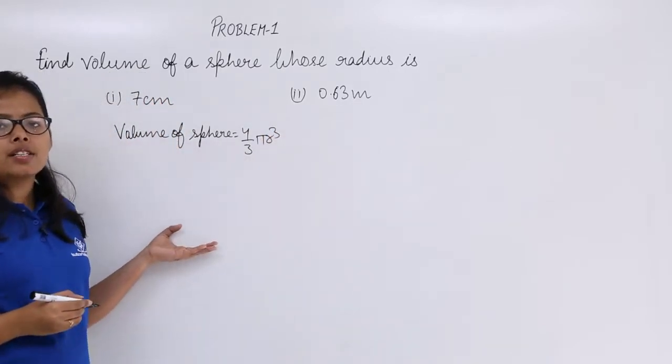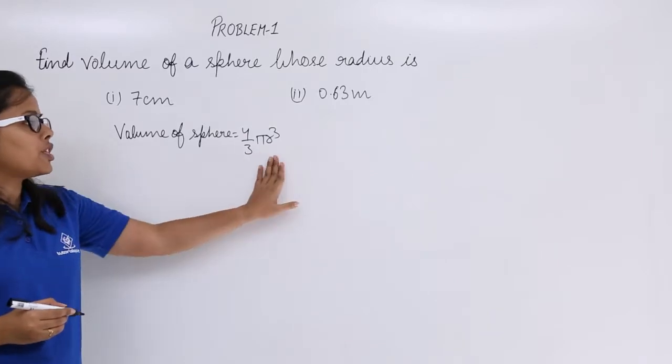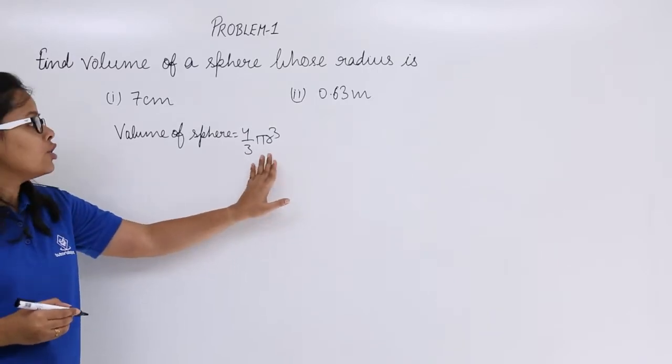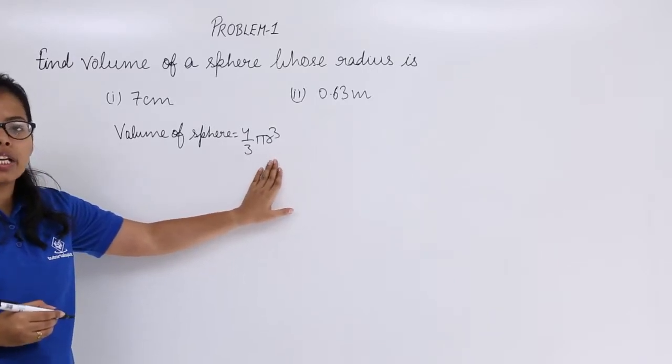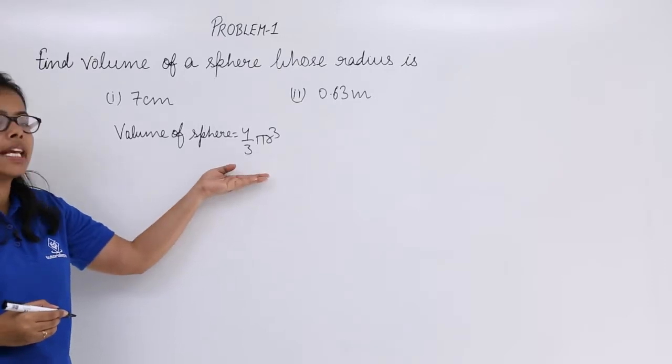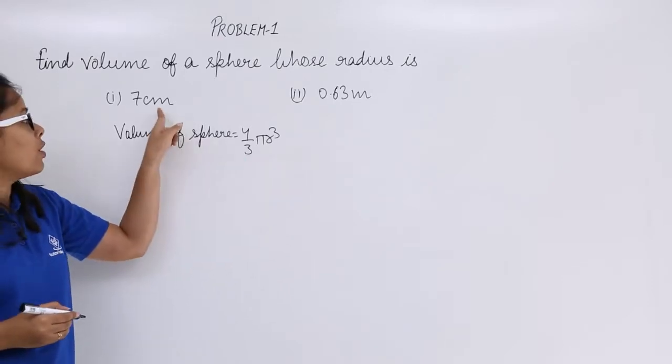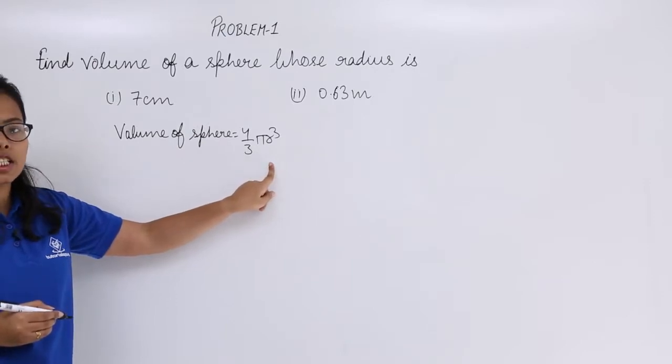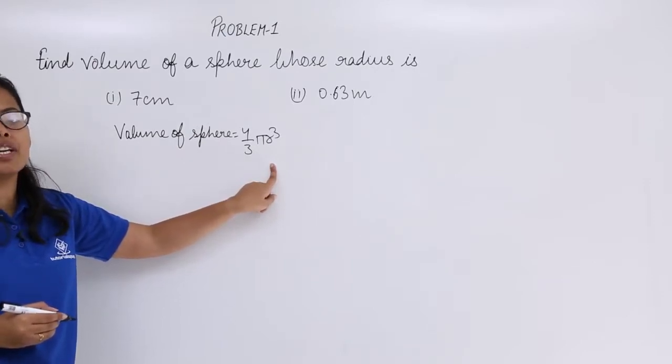As you know that sphere is a symmetrical shape which has got radius only. So you just need to know the radius of a sphere and you can easily get the volume of a sphere from this formula. So now let's use this value here in this expression to find out the volume of a sphere.